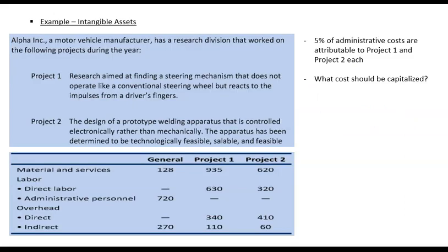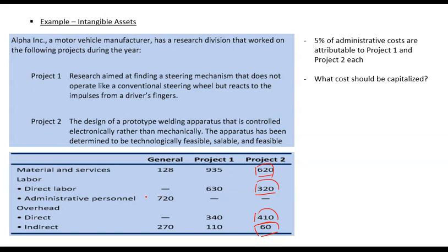Here is an example: what costs should be capitalized for Project 1 and Project 2? Project 1 is all about research, so none of its costs would be capitalized. For Project 2, you would take the directly attributable costs — 620, 320, 410, and 60 — but you would not include the administrative overhead because that administrative personnel overhead is a general expense and is not directly allocated to Project 1 or Project 2.